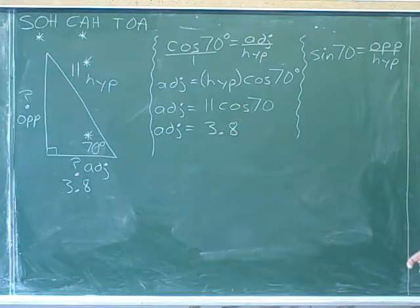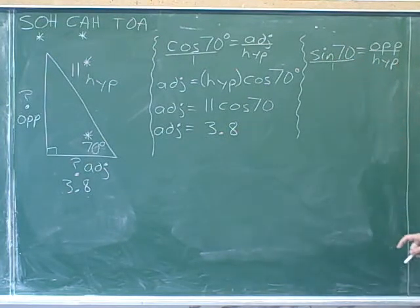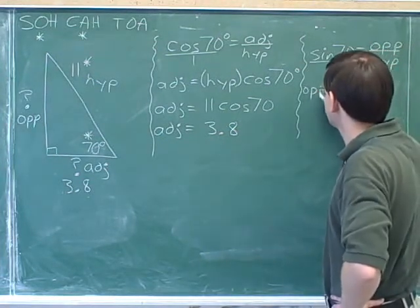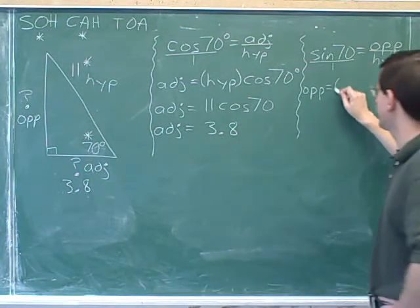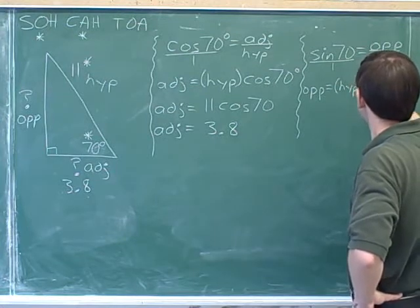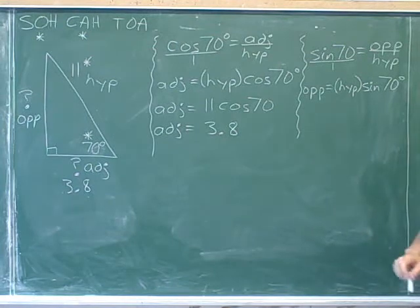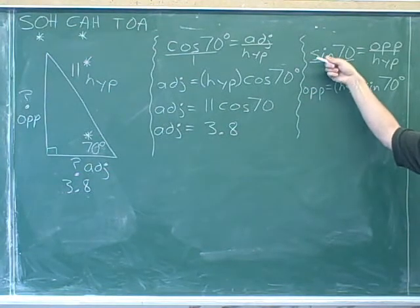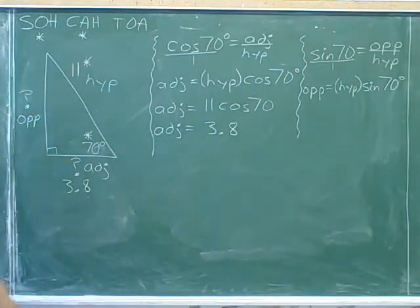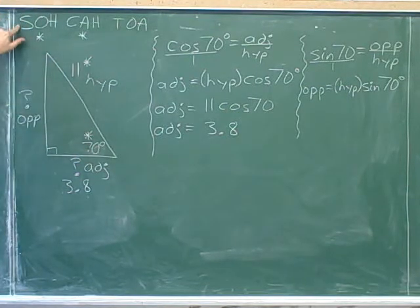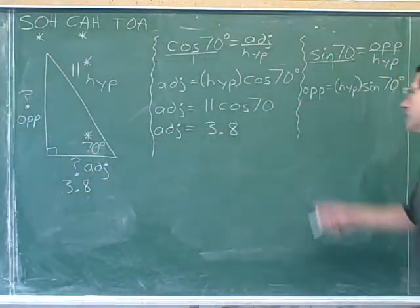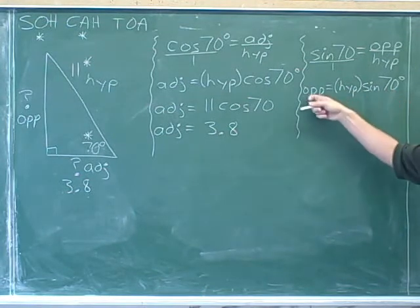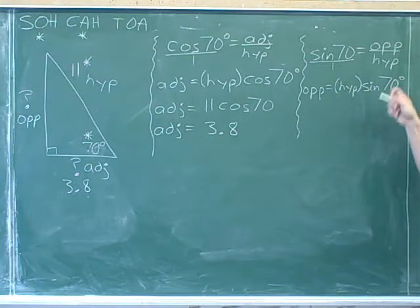I'm not going to plug in yet — instead I'll rearrange by cross-multiplying. Multiplying diagonally, 1 times the opposite side is just the opposite side, and multiplying the other way we get the hypotenuse times the sine of the angle. Eventually you'll get so comfortable with sine and cosine that you can go straight to this equation. The length of the opposite side is the length of the hypotenuse times the sine of the angle — the hypotenuse modified by multiplying by the sine of the angle.